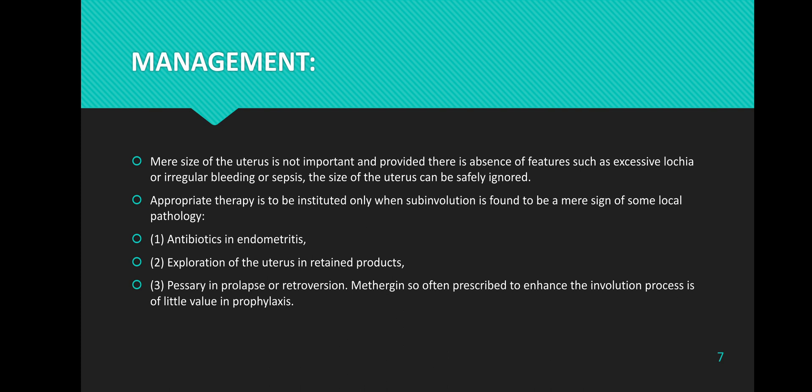Specific treatments include: antibiotics for endometritis, exploration of the uterus in retained products, pessary in cases of prolapse or retroversion. Methergine is often prescribed to enhance the involution process, though it is of little value in prophylaxis.